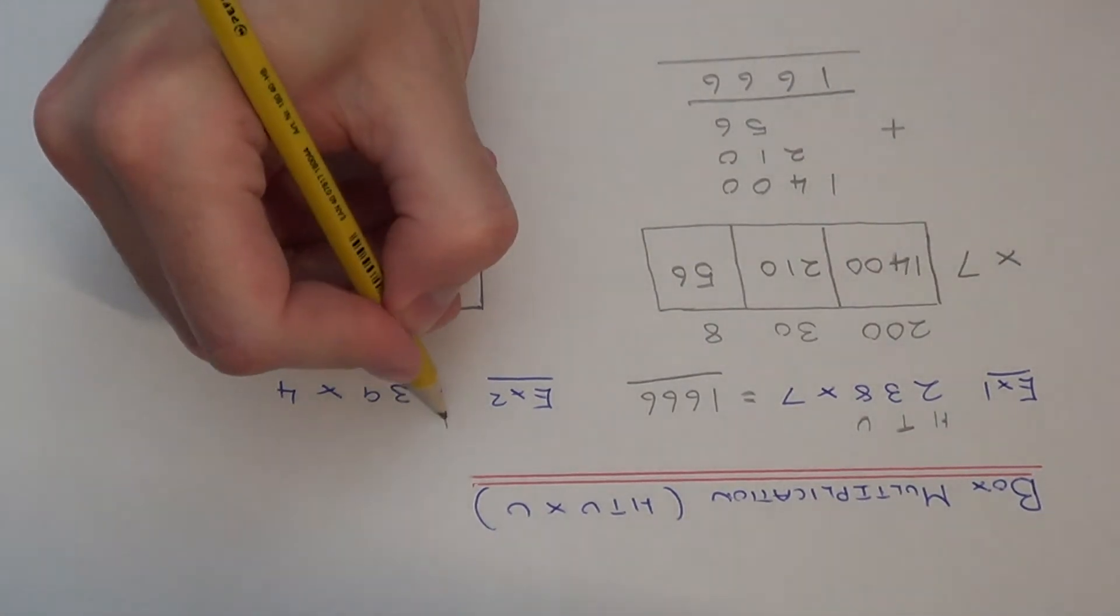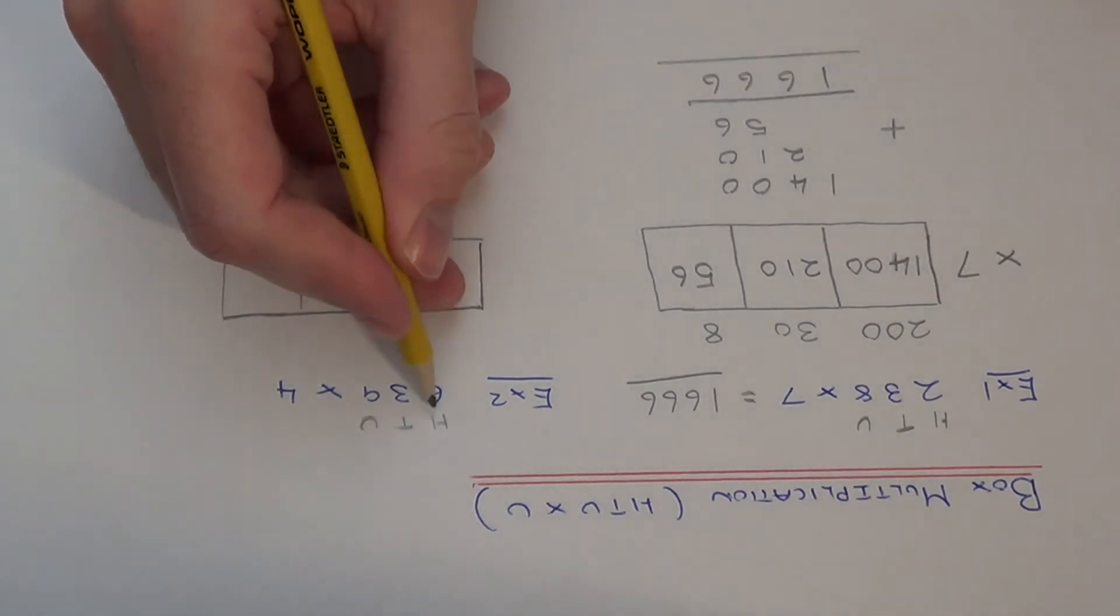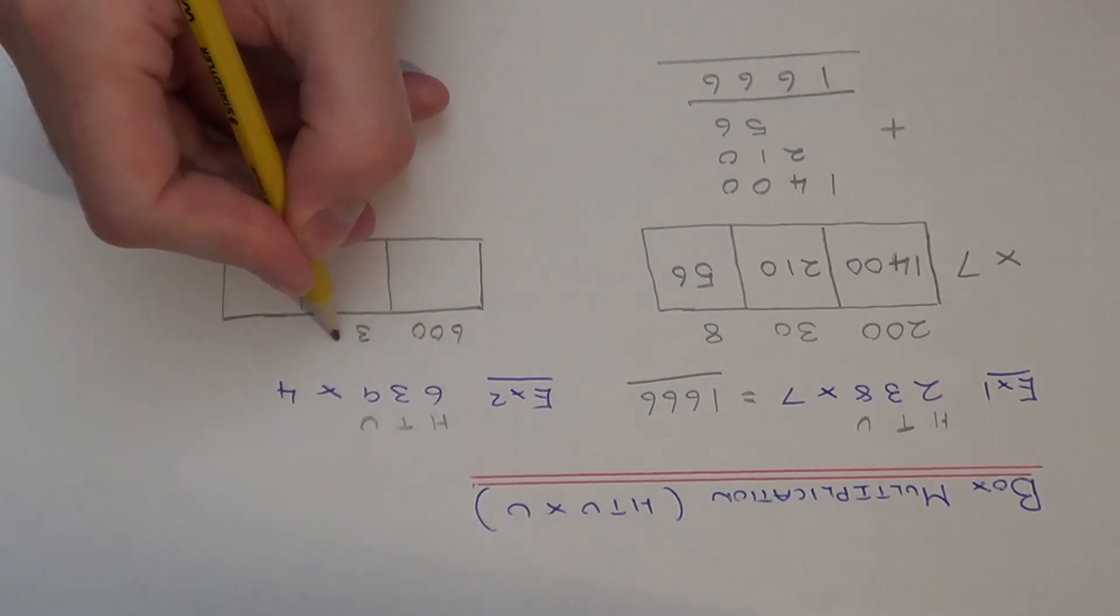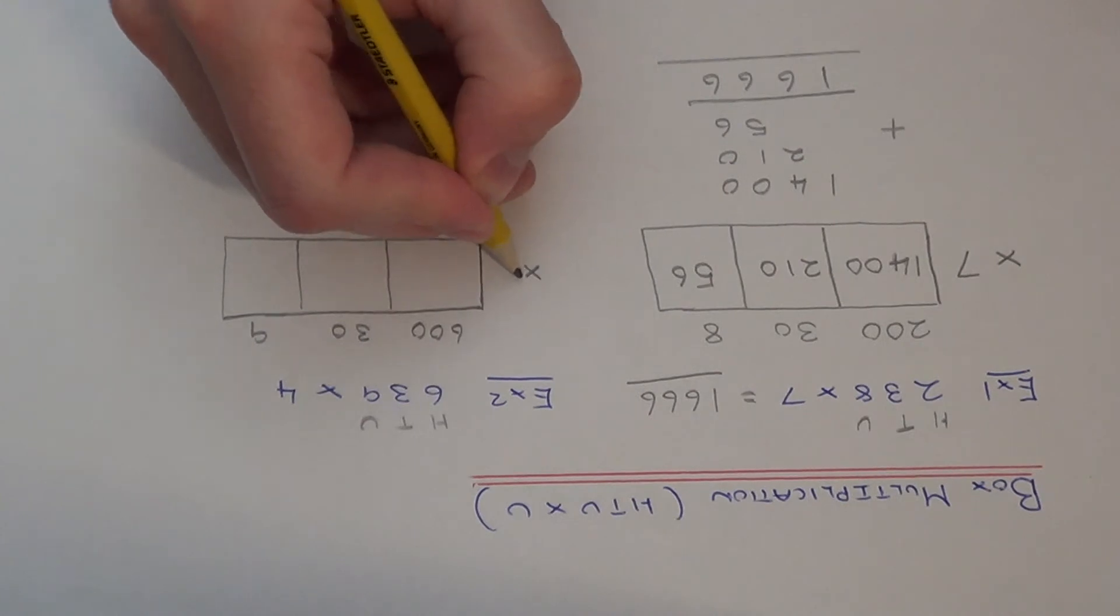If we break 639 up into hundreds, tens and units, we have 600, 3 tens and 9 units. And we're multiplying by 4 this time.